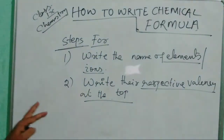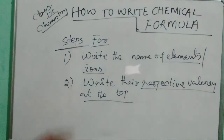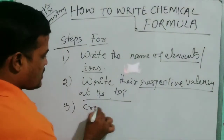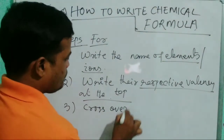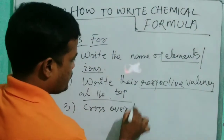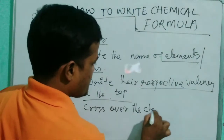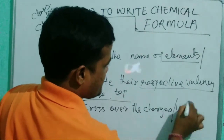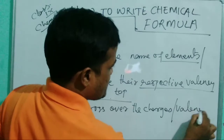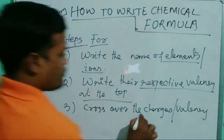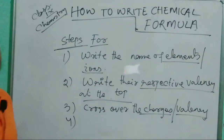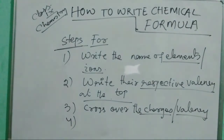Step number three: cross over the charges or valency. Step number four: cancel the digits if they are the same.